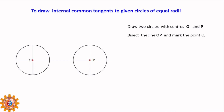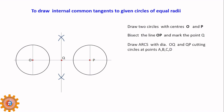Now bisect the line OP to get the midpoint Q. Draw arcs with diameter OQ and QP, cutting the circles at points A, B, C, and D. Using OQ you can find the center — you can bisect again to find the center of this line segment, or simply measure the total distance and mark the center point.